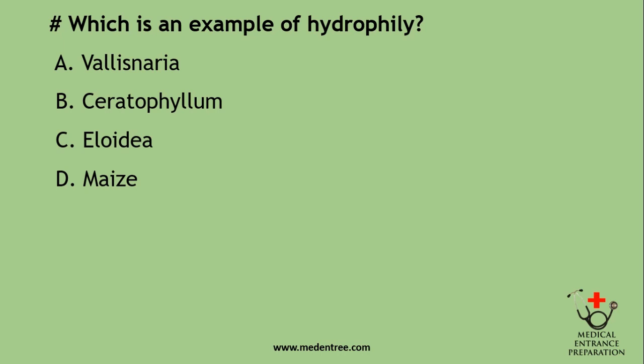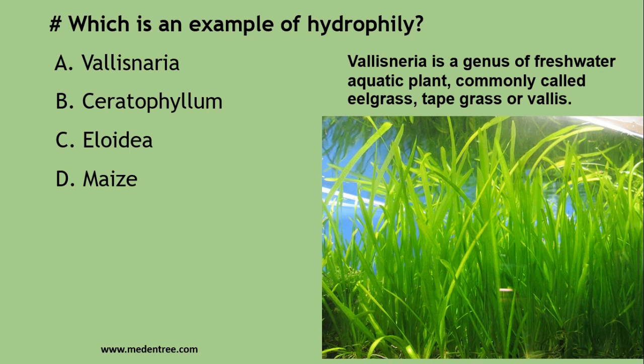Which is an example of hydrophily? Hydro means water, phily means loving. The options are: Valisneria, Ceratophyllum, Elodea, or maize. The correct answer is Valisneria. Valisneria is a genus of freshwater aquatic plant, commonly called eelgrass or tipped grass. In the Tarai region of Nepal, it is called Paterghari, and can be found nearby paddy fields.